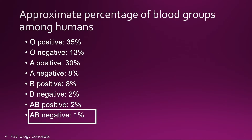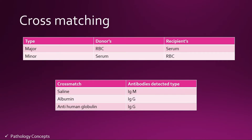The approximate percentage of blood groups among humans: the most common blood group is O positive, the next most common is A positive, and other blood groups are in decreasing order — O negative, A negative, B positive, B A positive, and AB negative. The rarest blood group is AB negative.